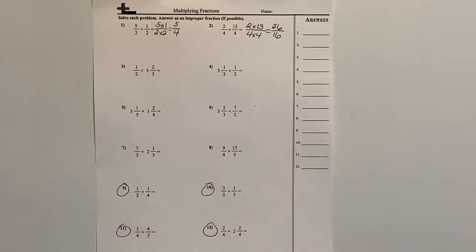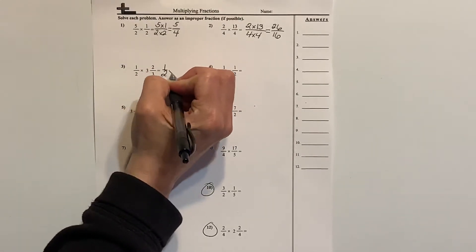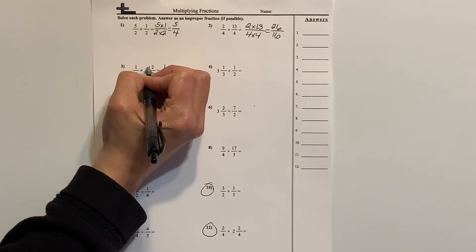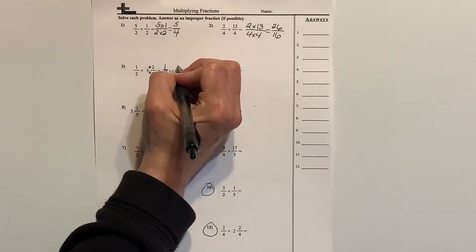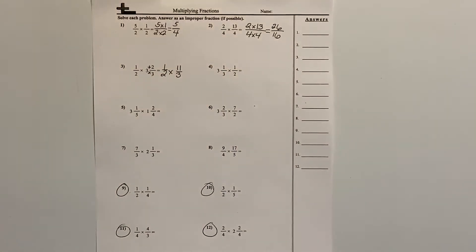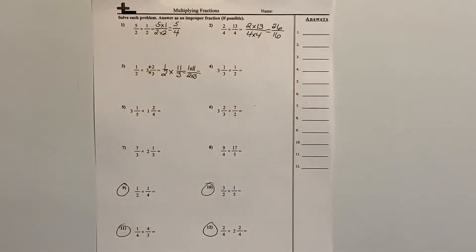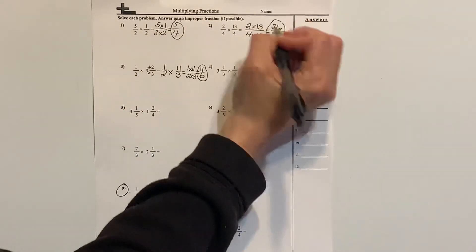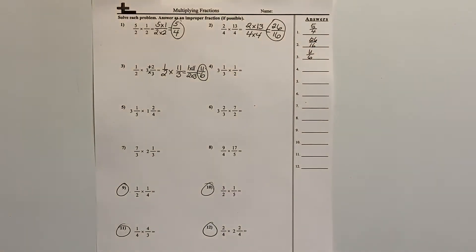Number 3 — I cannot multiply this the way it is; I'm going to have to change the mixed number into an improper fraction. I'll keep my half times, and I'll work it out to the side: 3 times 3 is 9, plus 2 is 11, so that's 11 thirds. So one half times 11 thirds is the same as 1 times 11 over 2 times 3, which gives me 11 sixths.